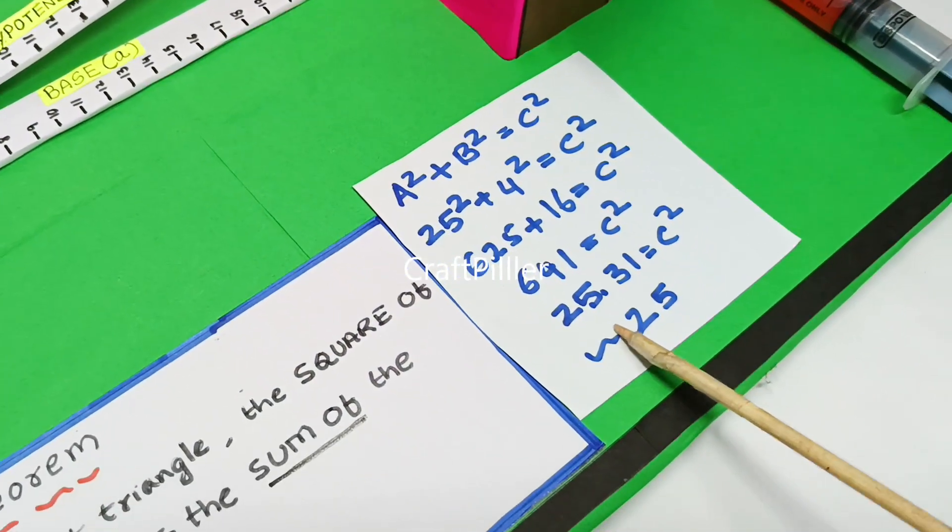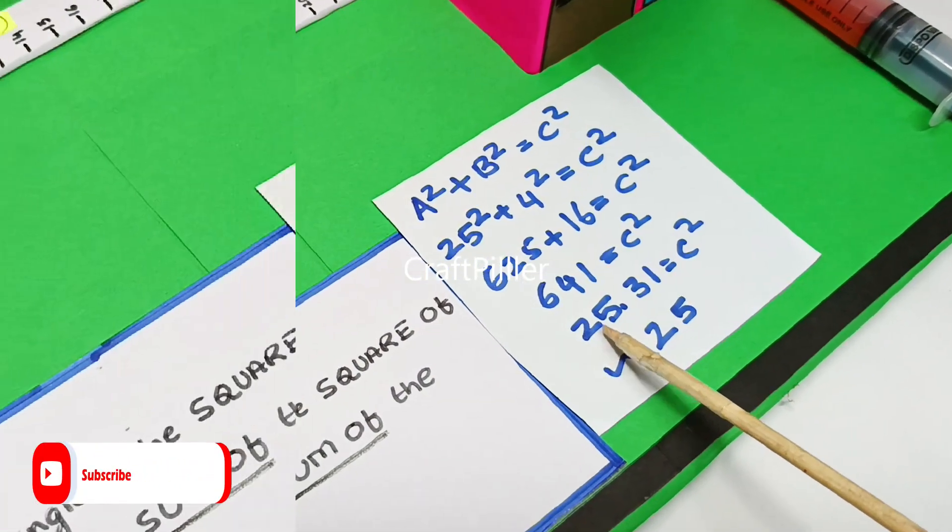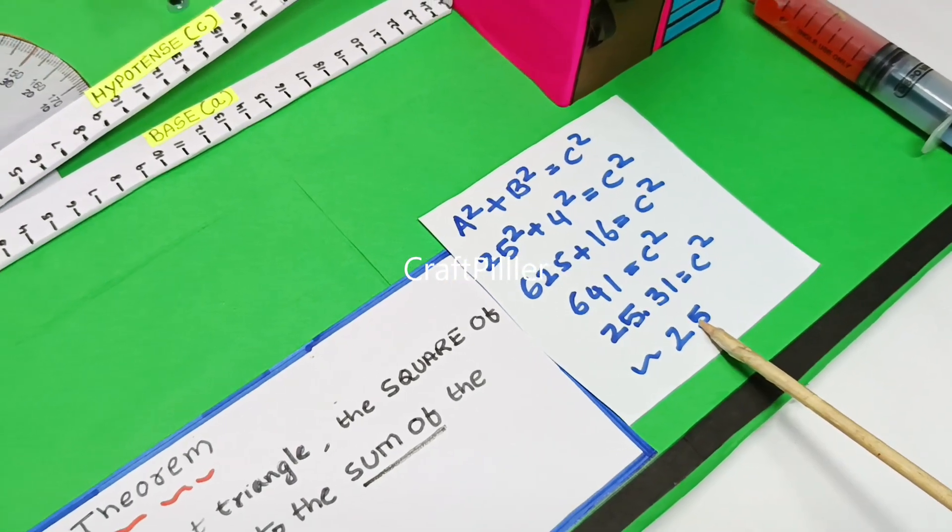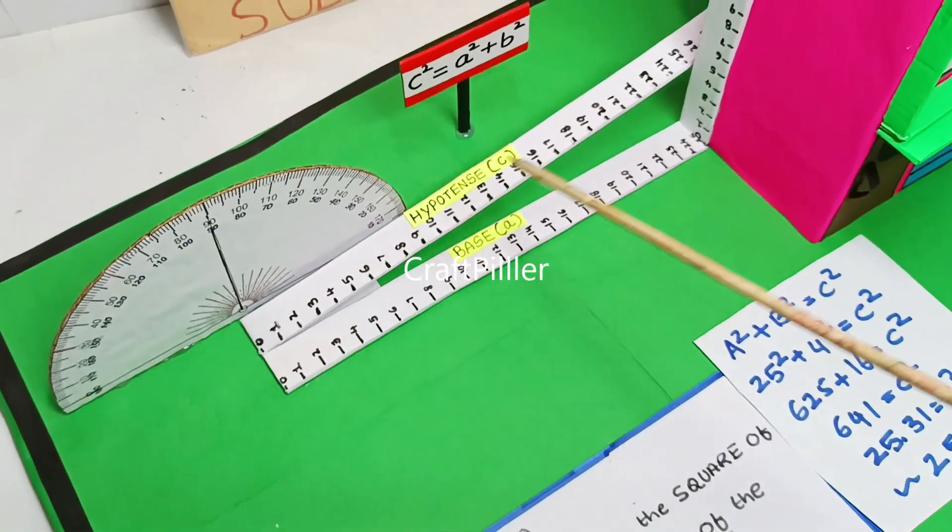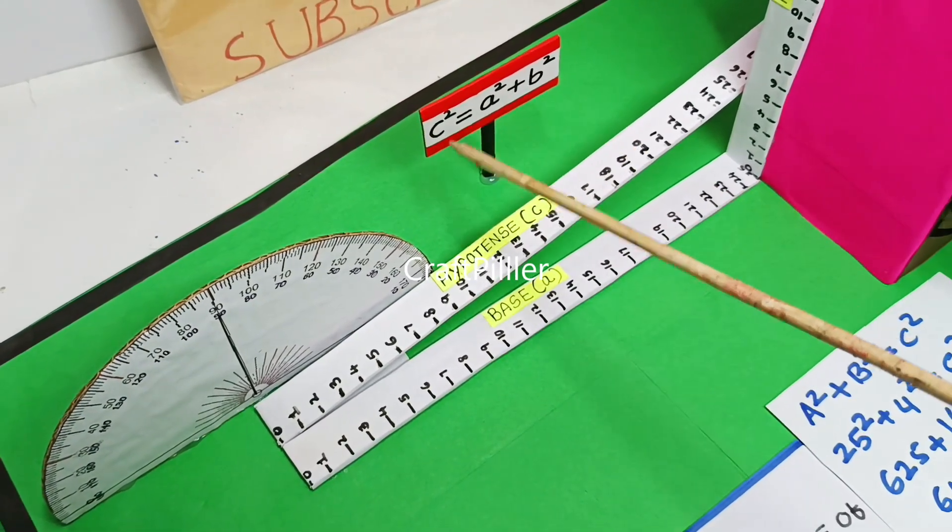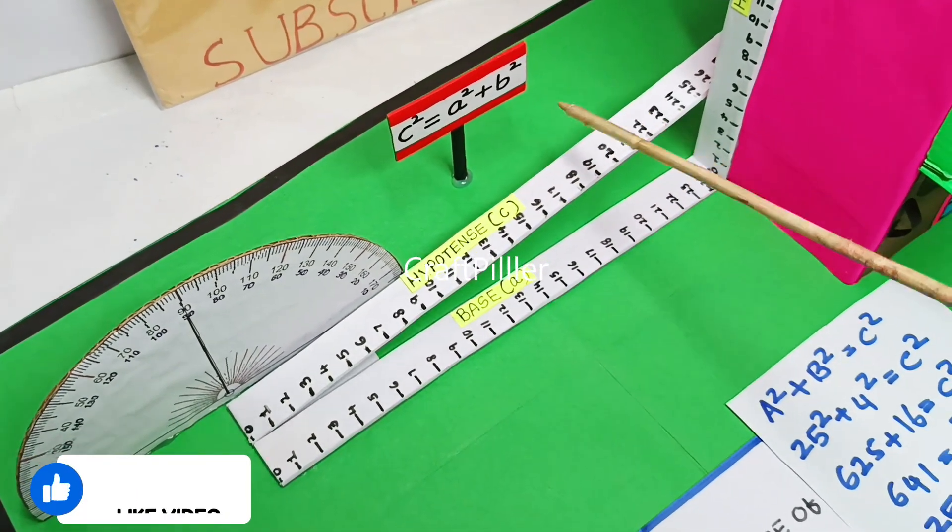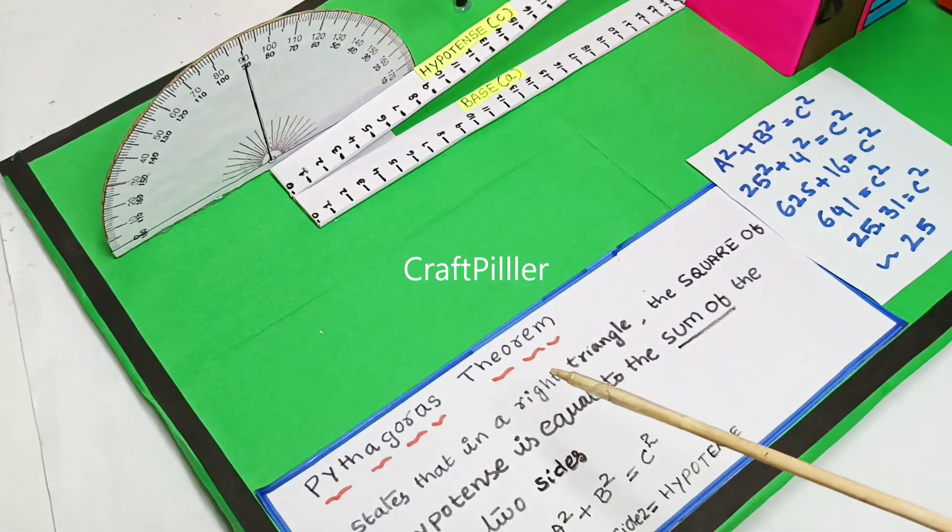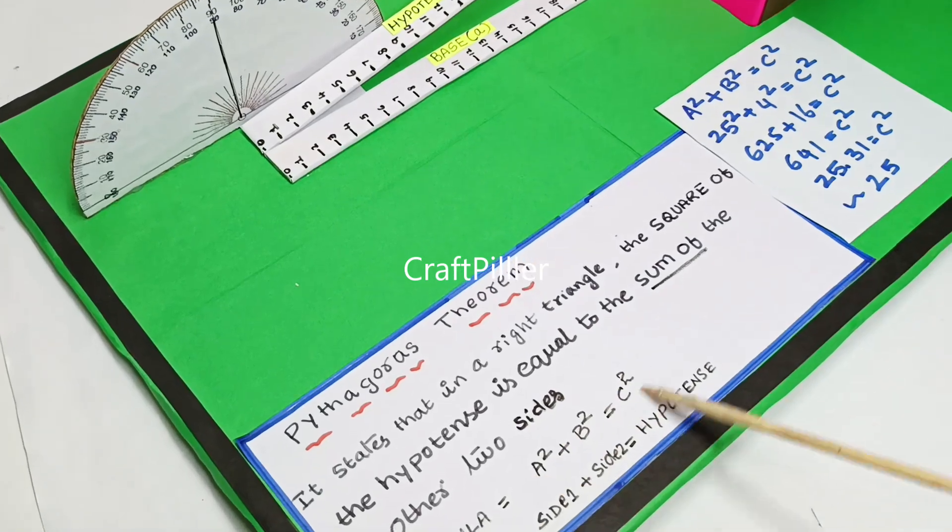We can also see here which is going to be 25.31, which is approximately equal to 25 centimeters. That is the hypotenuse we are getting by using this Pythagoras theorem formula, C square equals A square plus B square. This demonstration shows that we are able to prove this Pythagoras theorem formula.